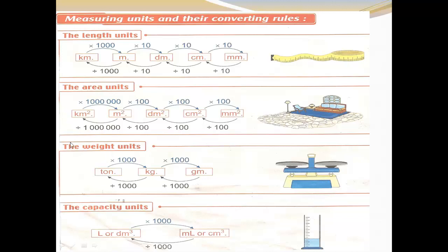The weight units: from ton to kilogram, multiply by one thousand. From kilogram to ton, divide by one thousand. From kilogram to gram, multiply by one thousand. From gram to kilogram, divide by one thousand.